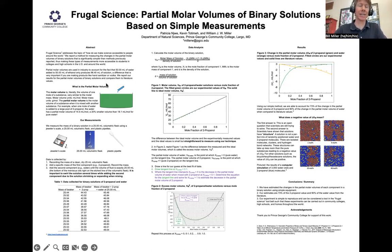And that difference is very important if you're making products like hand sanitizer or vodka that you sell by the volume. We would hate to say that you have one pint of vodka or hand sanitizer, and then somebody measures it and finds out that you actually have a little less than that pint. And so what we're going to do is measure partial molar volume and changes in partial molar volume.